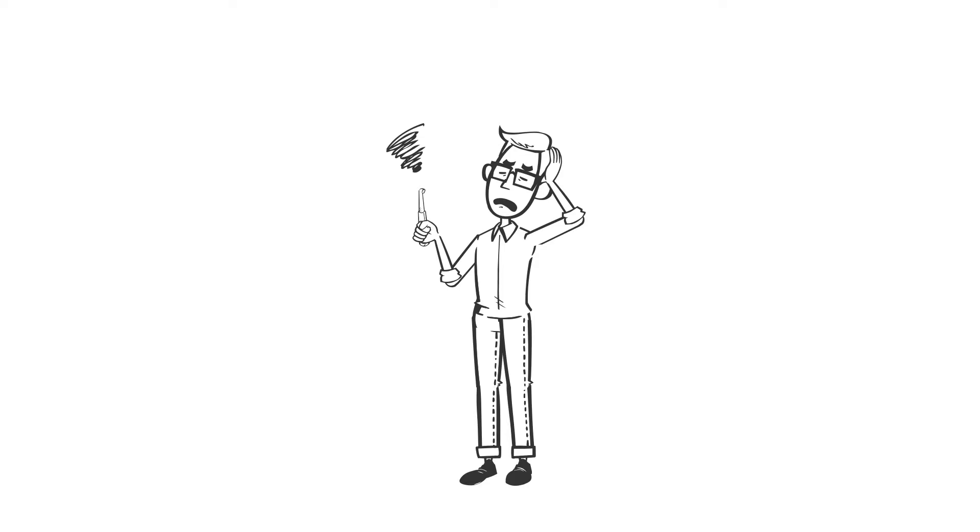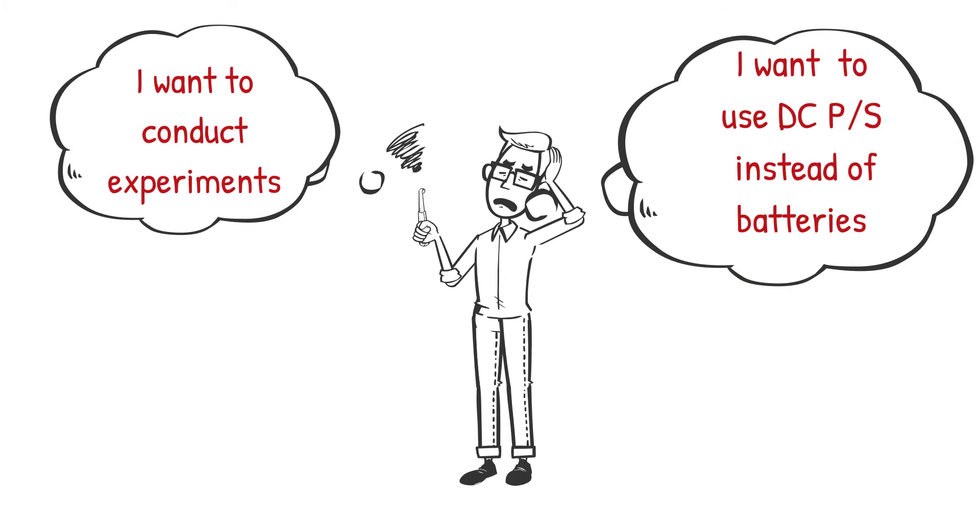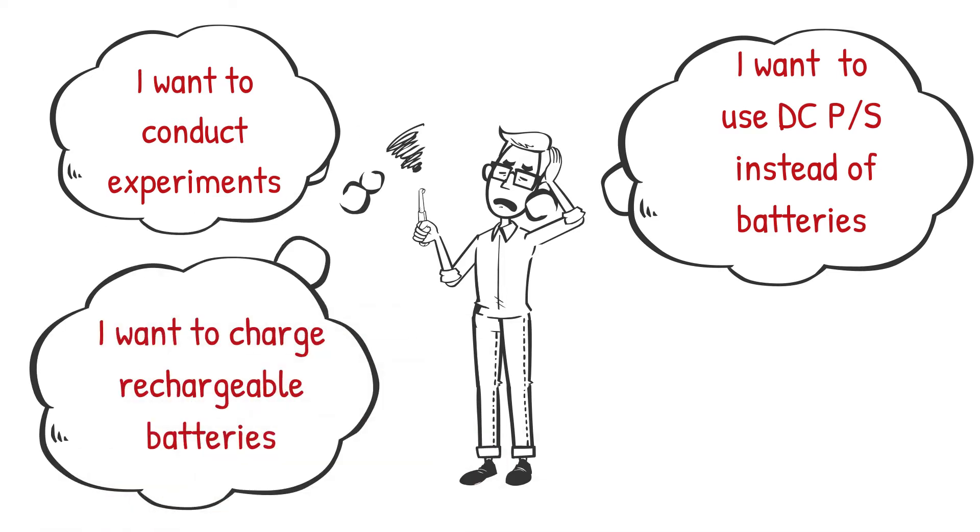These are some of the main reasons why people who develop electronic circuits need regulated DC power supplies. They want to conduct experiments and tests on electronic devices and electronic circuits. They want to use a regulated DC power supply as a substitute for testing circuits that run on batteries, or they want to charge rechargeable batteries, also known as secondary batteries.